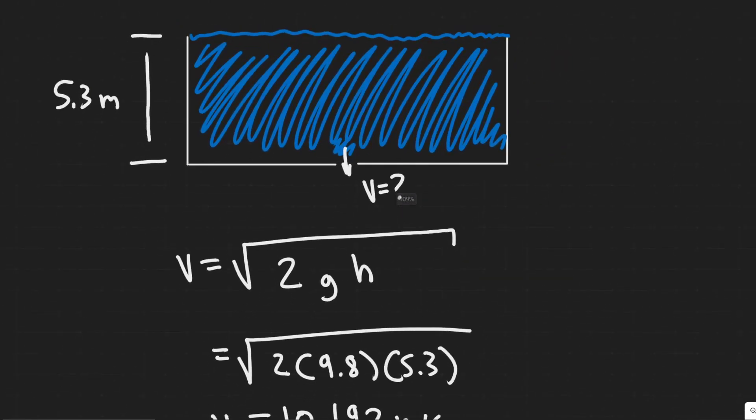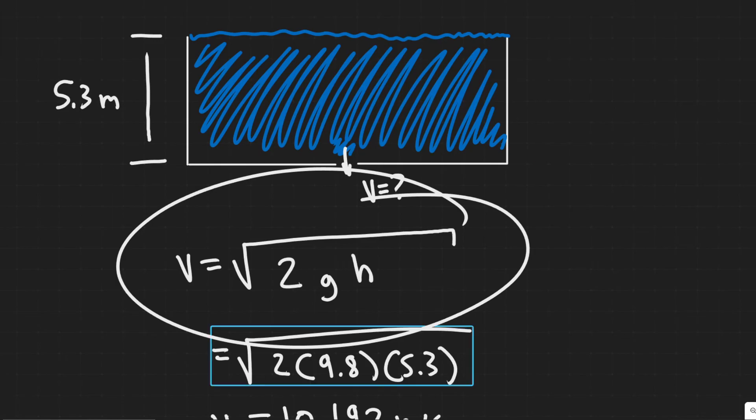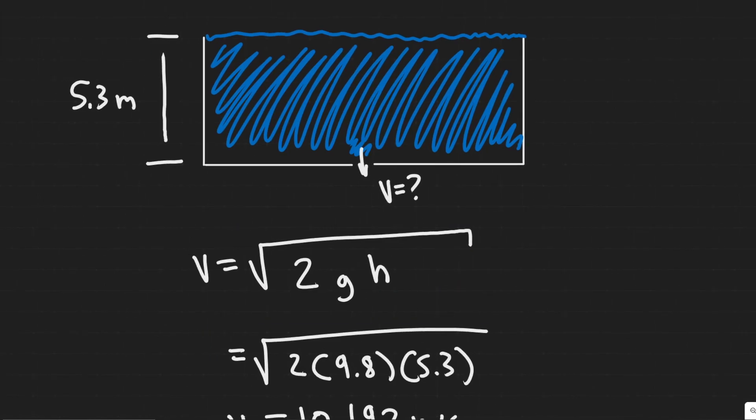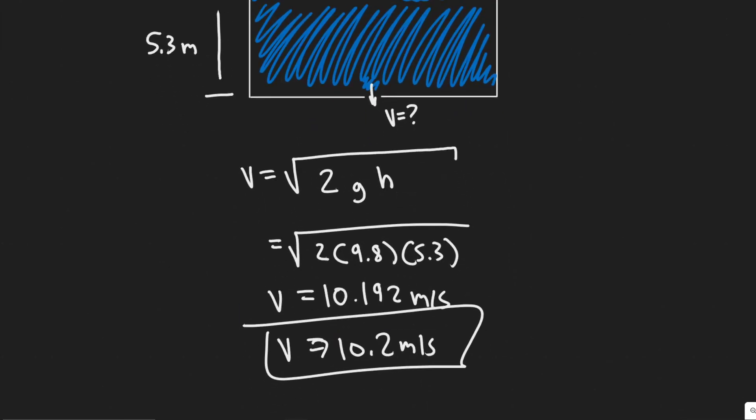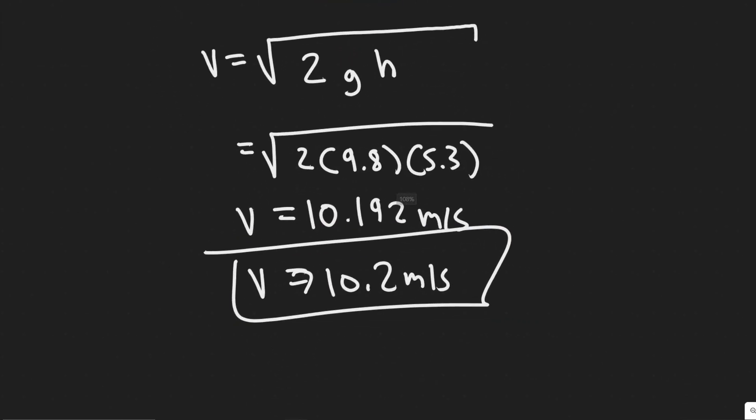So basically the main takeaway is Torricelli's equation. It's good use for finding this stuff. So just memorize it. V equals the square root of 2gh. And this is going to be your answer. And hopefully you found this video useful.